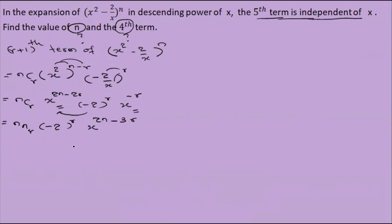So the general term is nCr times (minus 2) to the power r times x to the power 2n minus 3r. The fifth term is independent of x, meaning the power of x equals zero: x power 0.